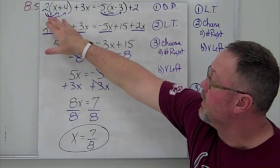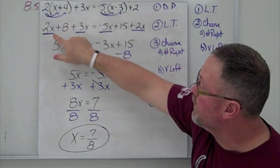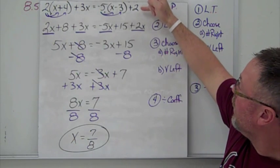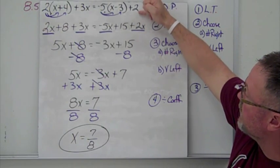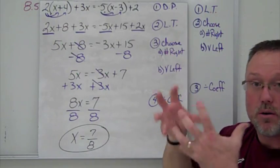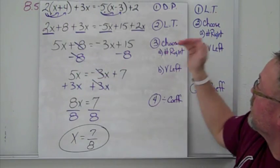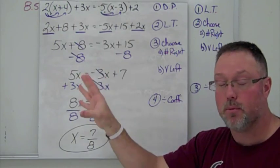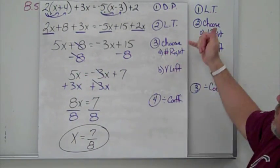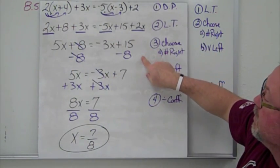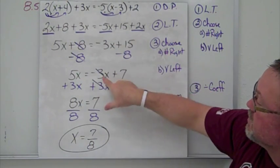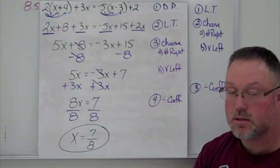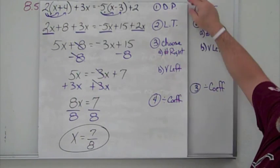A longer problem: first apply the distributive property, distributing the 2 into the first set of parentheses and distributing the negative 5 carefully, watching your signs. Bring the extra x term down. Now we have like terms to combine and simplify. Once we have the form (variable + number) = (variable + number), we choose to move the number to the right and the variable to the left, ending with a two-step equation. Divide by the coefficient — you can end up with a fraction for your answer.